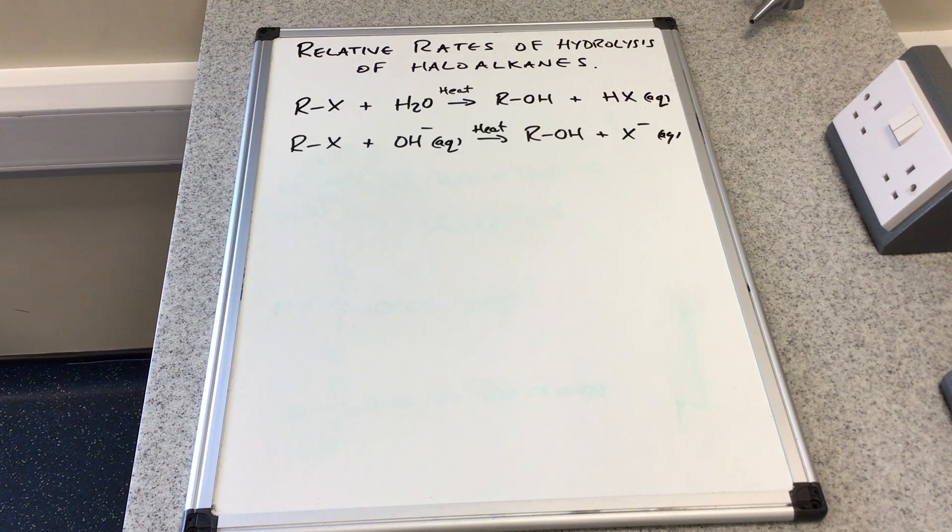The other way to do it is to take a source of aqueous hydroxide ion, something like sodium hydroxide aqueous, react that with the haloalkane with some heat, and we get the alcohol and again we get an aqueous halide ion.